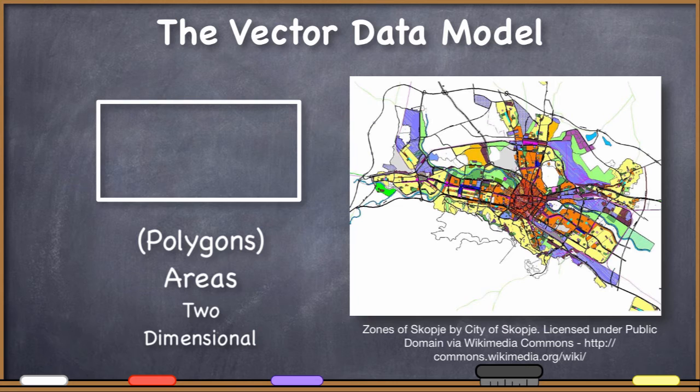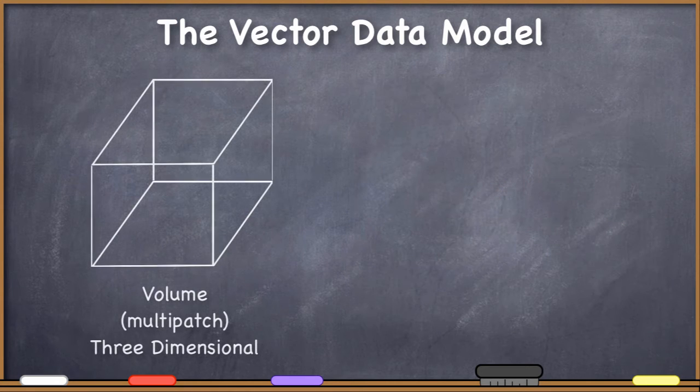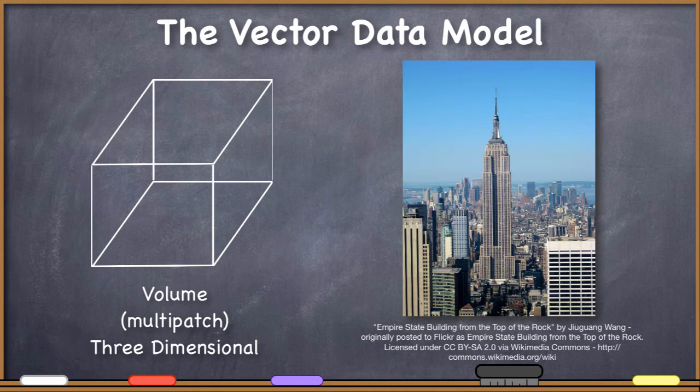Let's give some examples of volumes. If you're thinking in terms of three-dimensional representation, then a three-dimensional representation of a building may well be the classic example of a volumetric vector representation. That's a pretty good list for some representative examples, but I don't want to give the impression that these are the only ways you could represent these features.